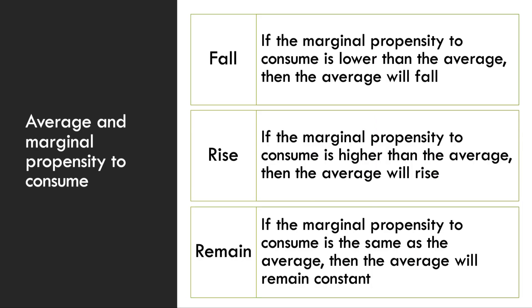It's quite important to think about the relationship between the average and the marginal propensity to consume. If somebody's marginal propensity to consume is lower than the previous average, that means the average will fall. But if the marginal propensity to consume is higher than the previous average, the average will go up. It depends on what people choose to do with their extra income. If the marginal propensity to consume is the same as the average, the average will stay constant.